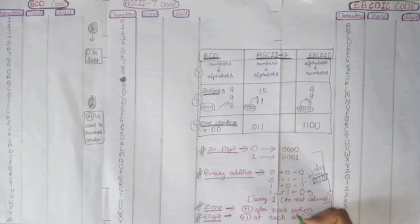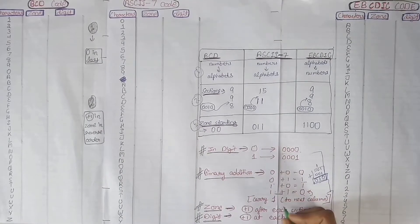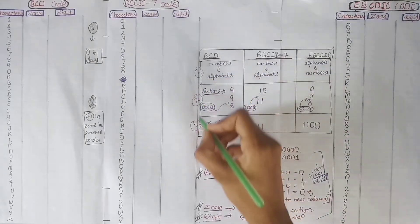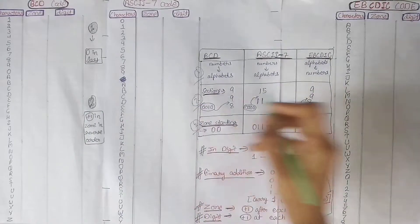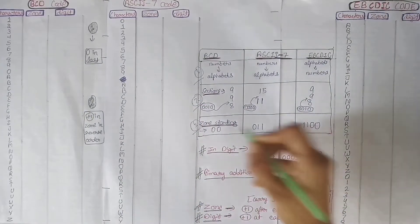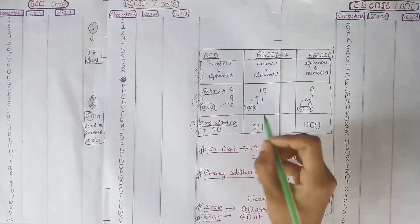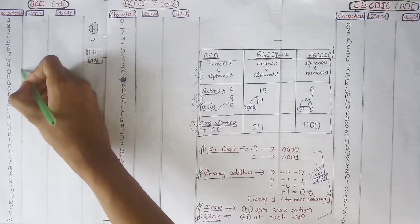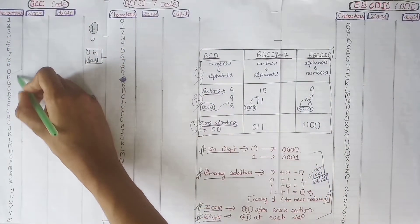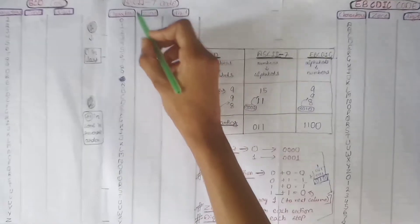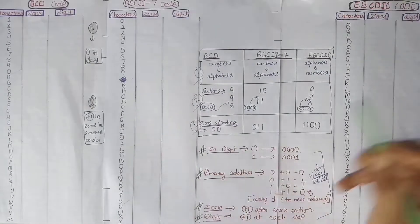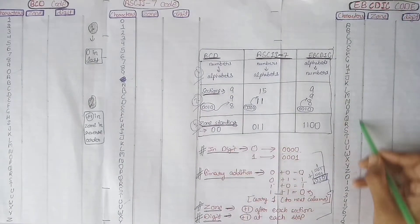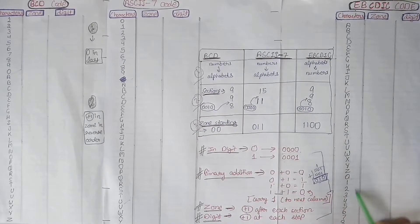Those were the basic rules used in these codes. Now the most important three basic tricks for writing BCD code, ASCII code, and EBCDIC code easily. Trick one: in BCD code and ASCII code, we write numbers before the alphabets. But in EBCDIC code, we write alphabets first and then the numbers.